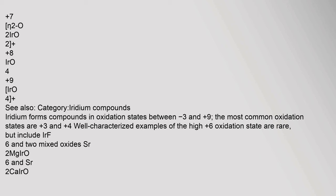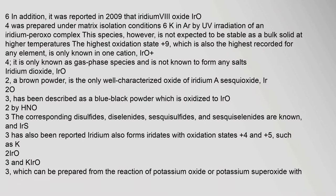Iridium forms compounds in oxidation states between minus 3 and 9. The most common oxidation states are 3 and 4. Well-characterized examples of the high 6 oxidation state are rare, but include IrF6 and two mixed oxides. It was reported in 2009 that iridium(V) oxide IrO4 was prepared under matrix isolation conditions at 6K by UV irradiation of an iridium peroxo complex. This species, however, is not expected to be stable as a bulk solid at higher temperatures.